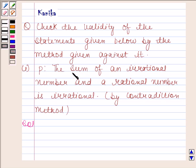Here the statement is the sum of an irrational number and a rational number is irrational. Now let, if possible, negation of P is true, that is, their sum is a rational number.